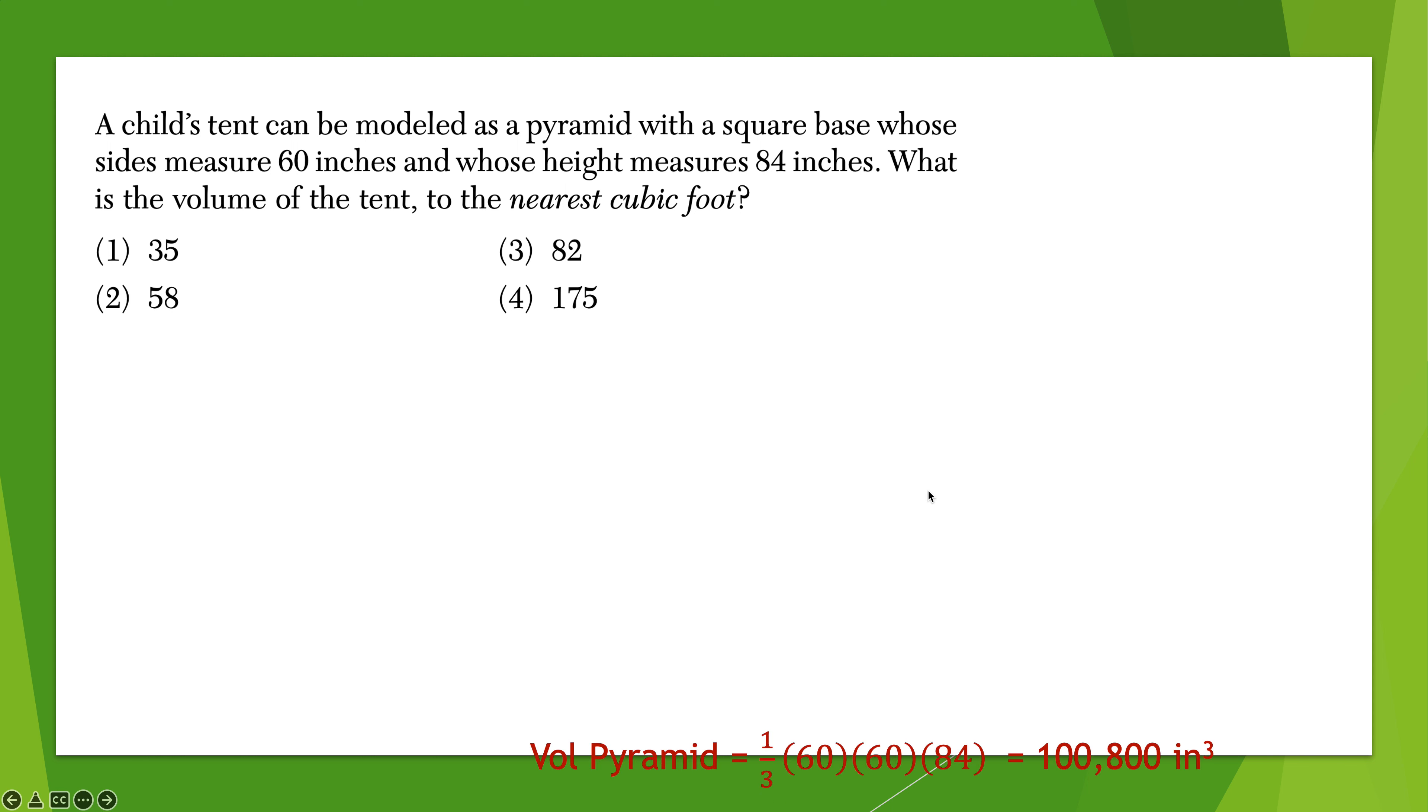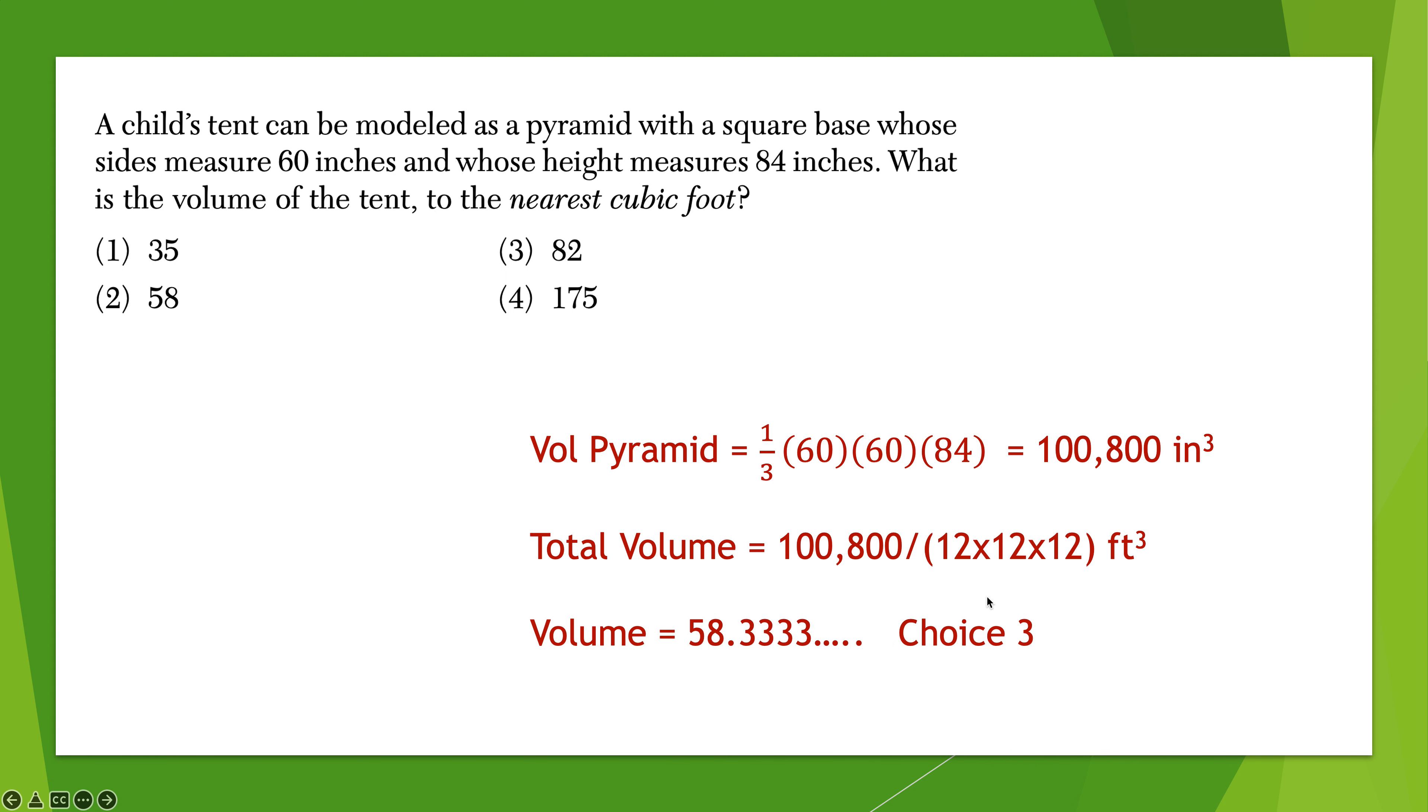A little more straightforward on this one. The volume of a pyramid is 1 third times the area of the base. That's 60 times 60, times the height, which is 84. That comes out to a volume of 100,800 cubic inches. But notice in italics, what are they asking for? Nearest cubic foot. So now I need to do some conversions. 100,800 divided by, and since it's feet cubed, it's a 12, a 12, and a 12. One for each dimension. And when I do that, I get 58.3 repeating, which is choice two.